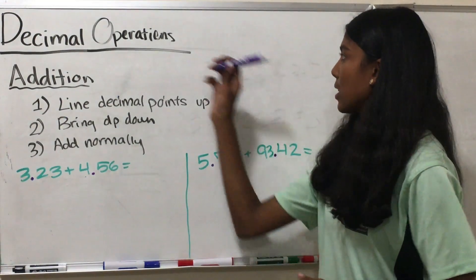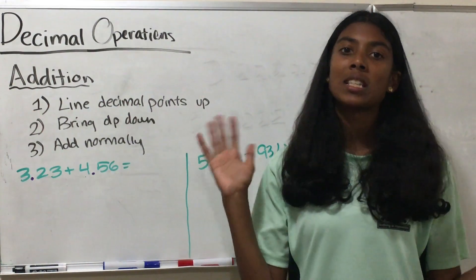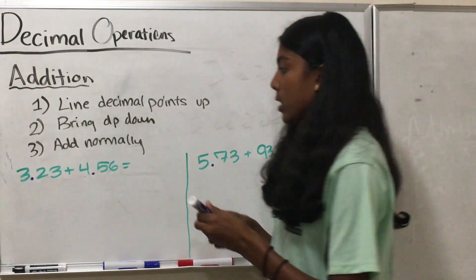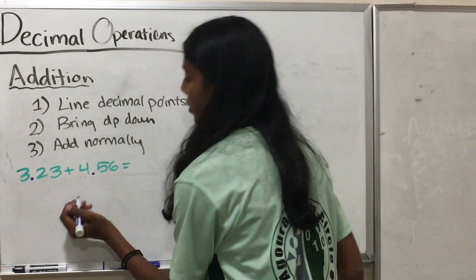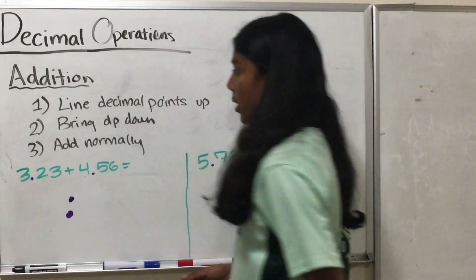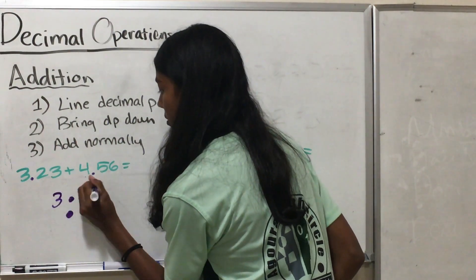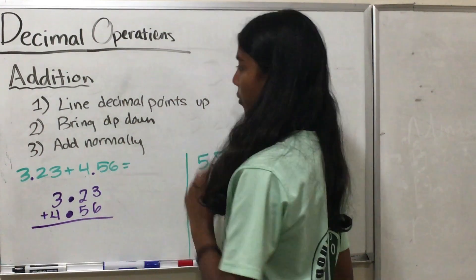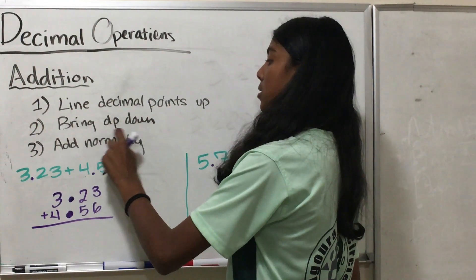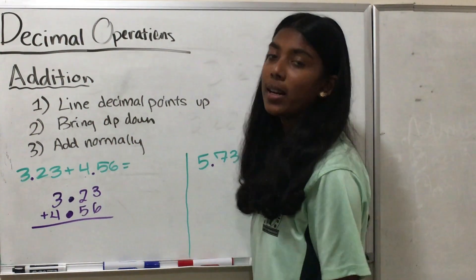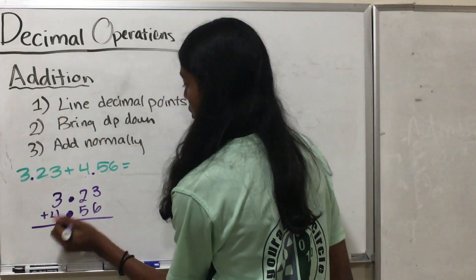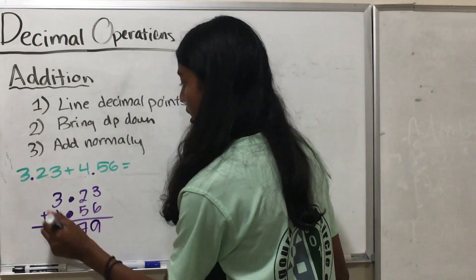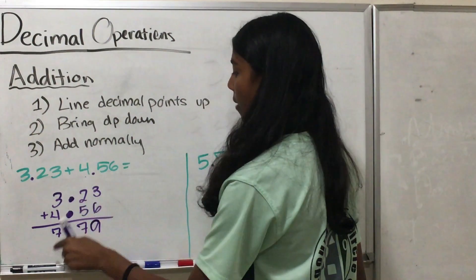Our last topic of today is decimal operations. Let's start with addition because it is the easiest. There are 3 main steps: first, line the decimal points up; second, bring the decimal point straight down; and third, add normally. For example, 3.23 plus 4.56: we line up the decimals, bring the decimal point down, then add: 3 plus 6 is 9, 2 plus 5 is 7, 3 plus 4 is 7. So our answer is 7.79.